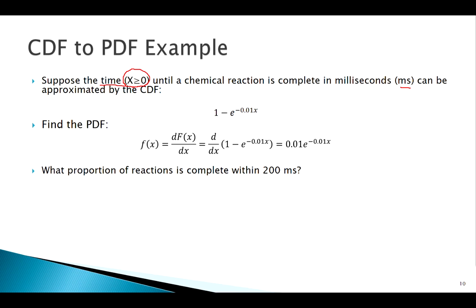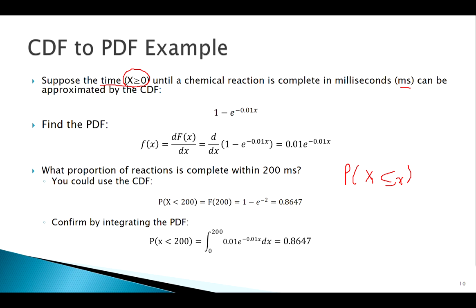If we have the CDF and the PDF with the continuous random variable, that means we have options. Let's solve using the CDF first. All I have to do for the CDF, we know what the CDF gives us: probability X less than or equal to some number. Within 200 milliseconds, that's exactly what we're looking for, less than 200. All you have to do is plug 200 right into that CDF, no integration required.